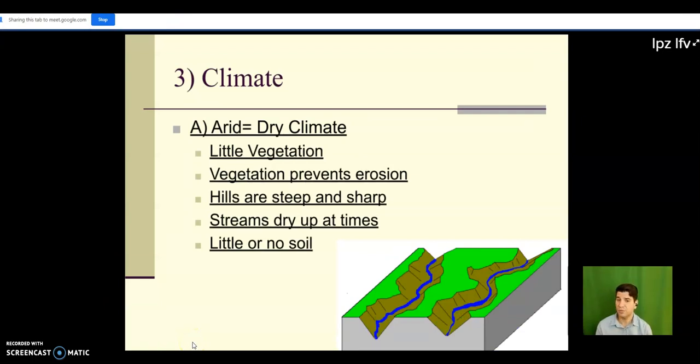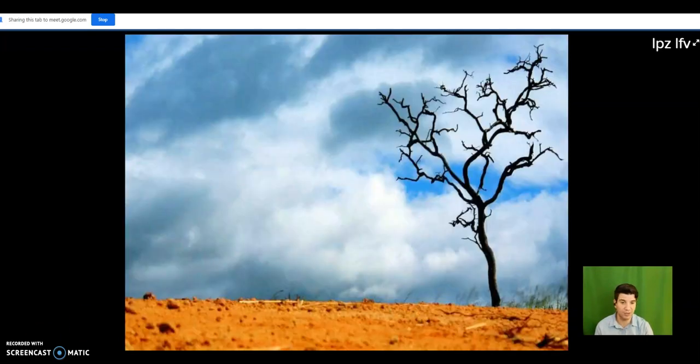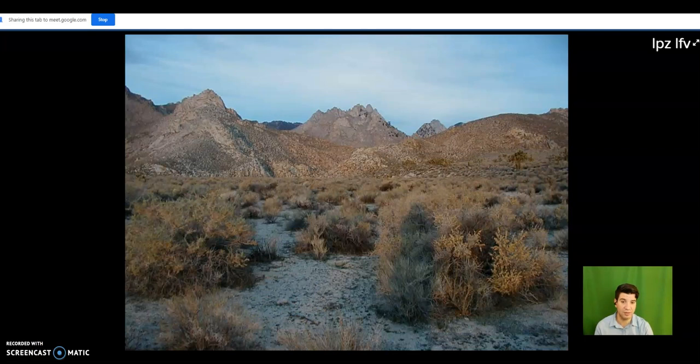All right so two major factors play a role: arid versus wet environments. So arid means dry. Now if you have a dry climate like you're in an area like a desert, you're gonna find little vegetation. Now that vegetation does prevent erosion but there's just not a lot of it. So what ends up happening is you do get quite a bit of erosion and you do get sharp steep hills, streams that are transitory. In some places they only have rivers run through a couple days a year and then those rivers are dry the rest of the time.